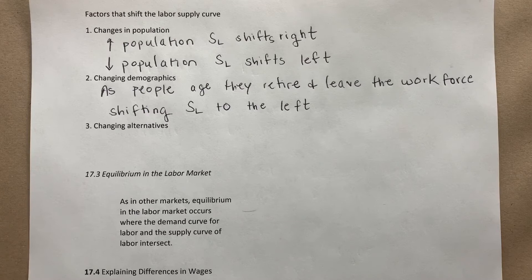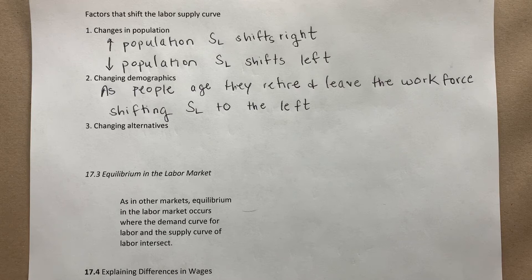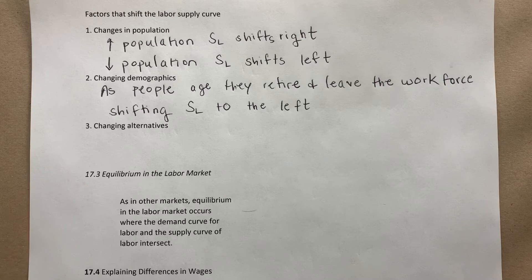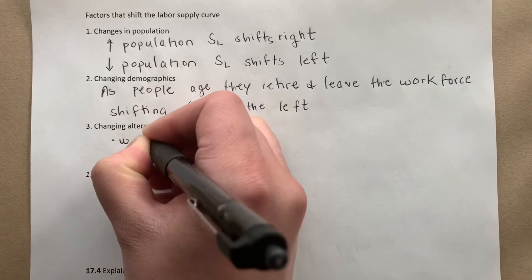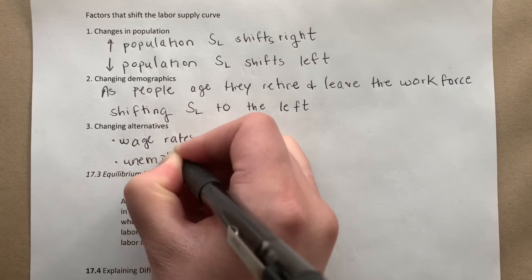Changing alternatives is the final factor. People have alternatives to work, and a change in how attractive those alternatives are changes the labor supply curve. If the wage rate changes in an alternative job, you might decide to move to a different industry. Or, if unemployment benefits increase, it may actually be better to stay unemployed — so wage rates in alternative jobs and unemployment benefits can both shift labor supply.